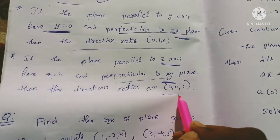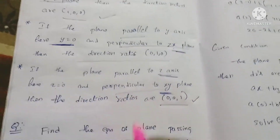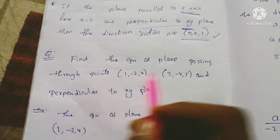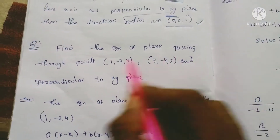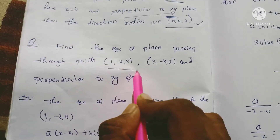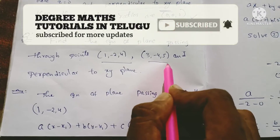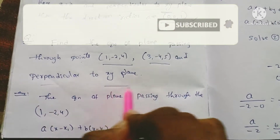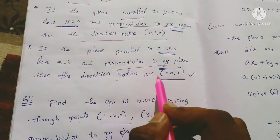The next question: Find the equation of the plane passing through the points (1, -2, 4) and (3, -4, 5), and perpendicular to the x-y plane. Since the plane is perpendicular to the x-y plane, the direction ratios are 0, 0, 1.